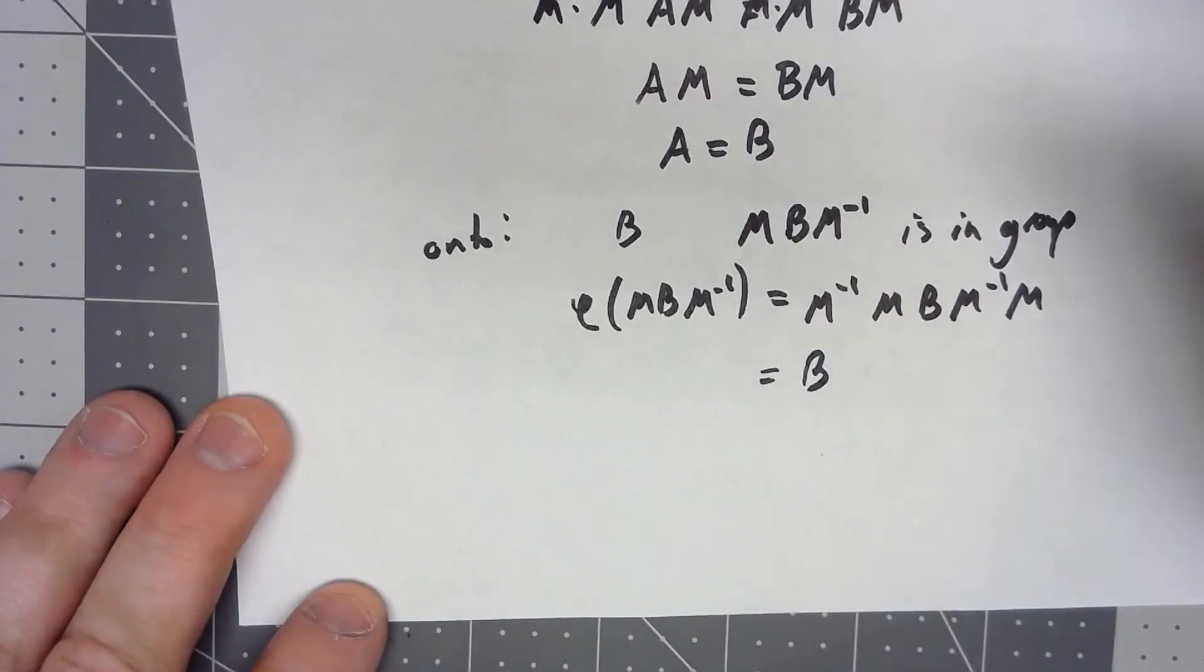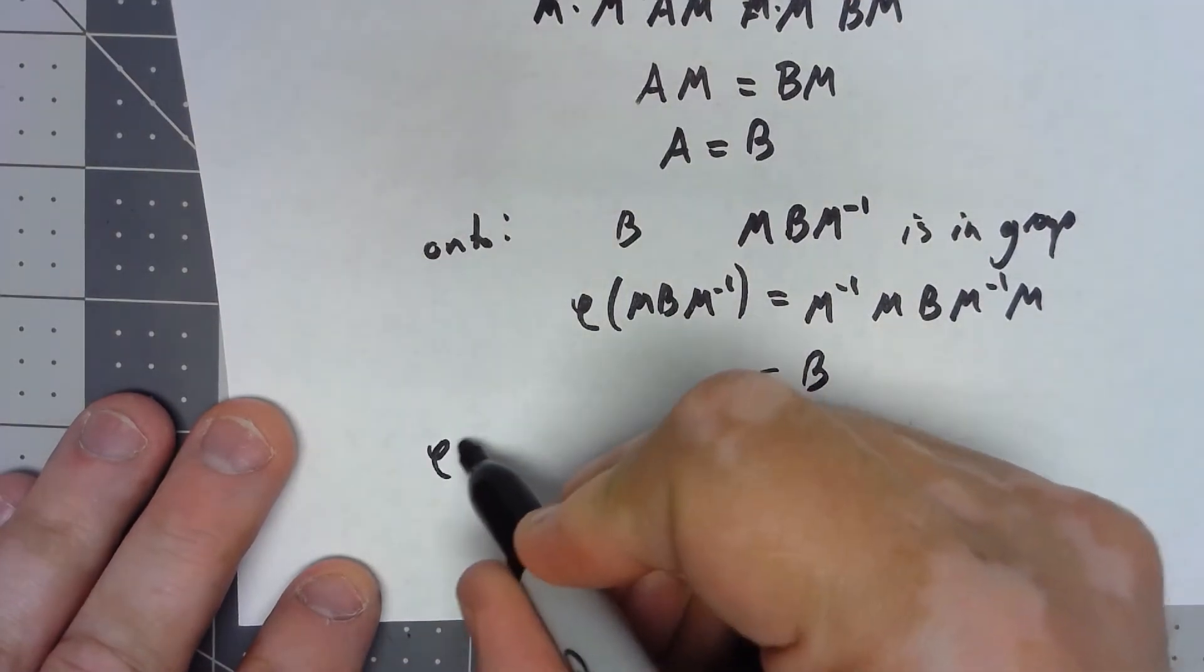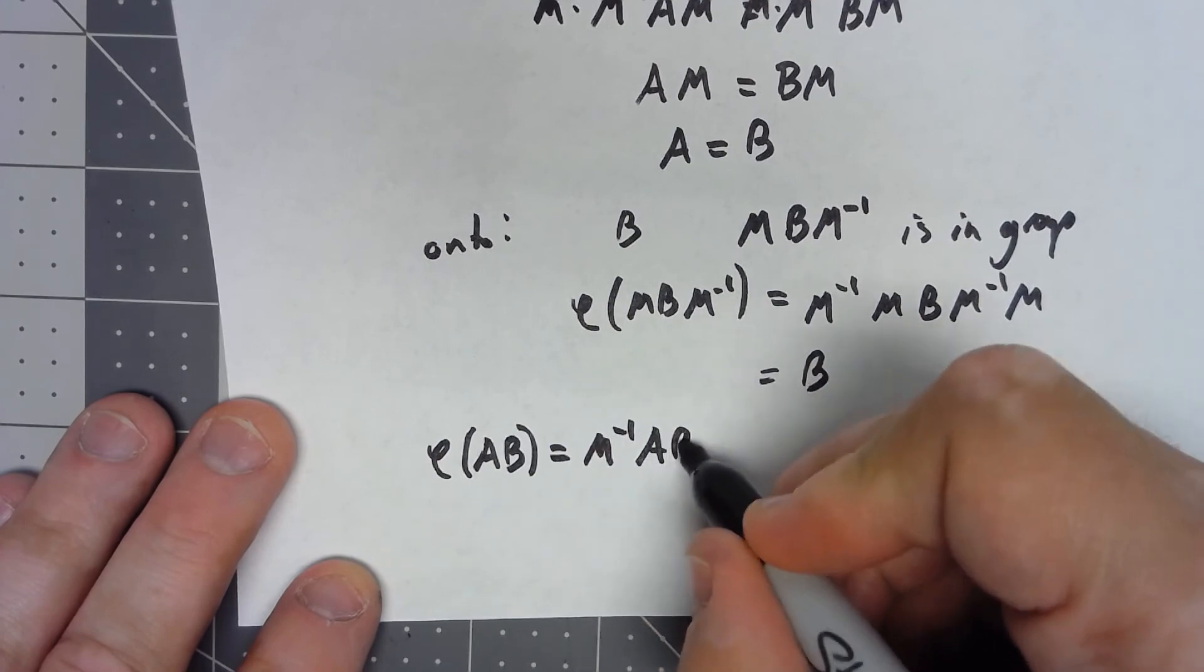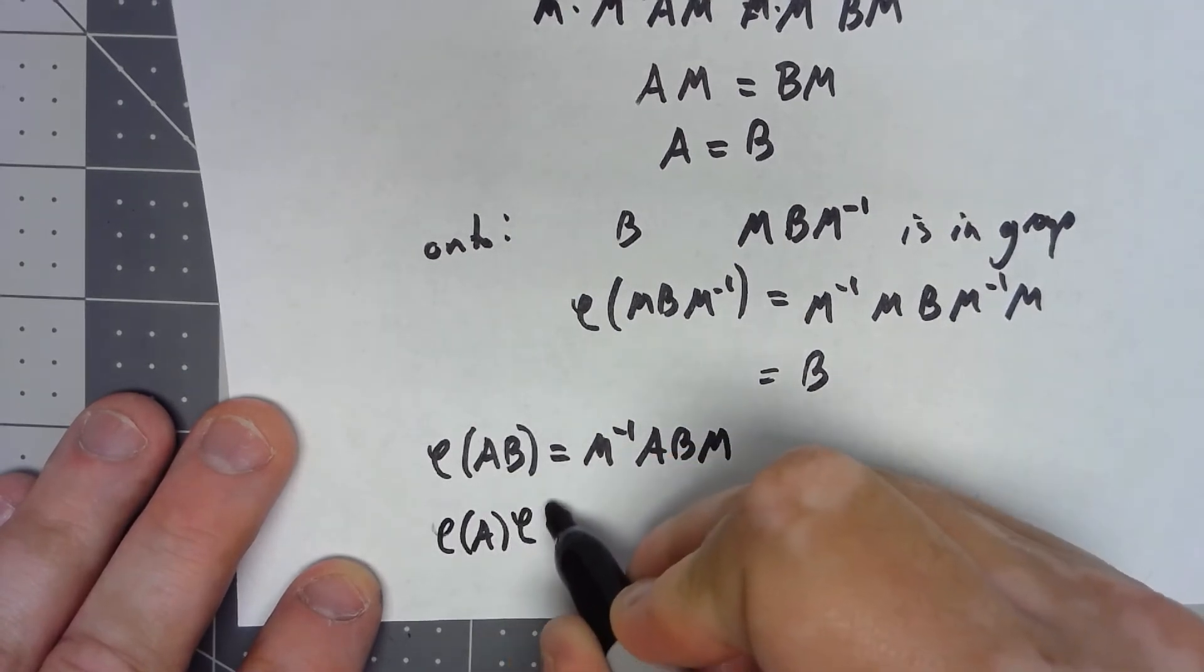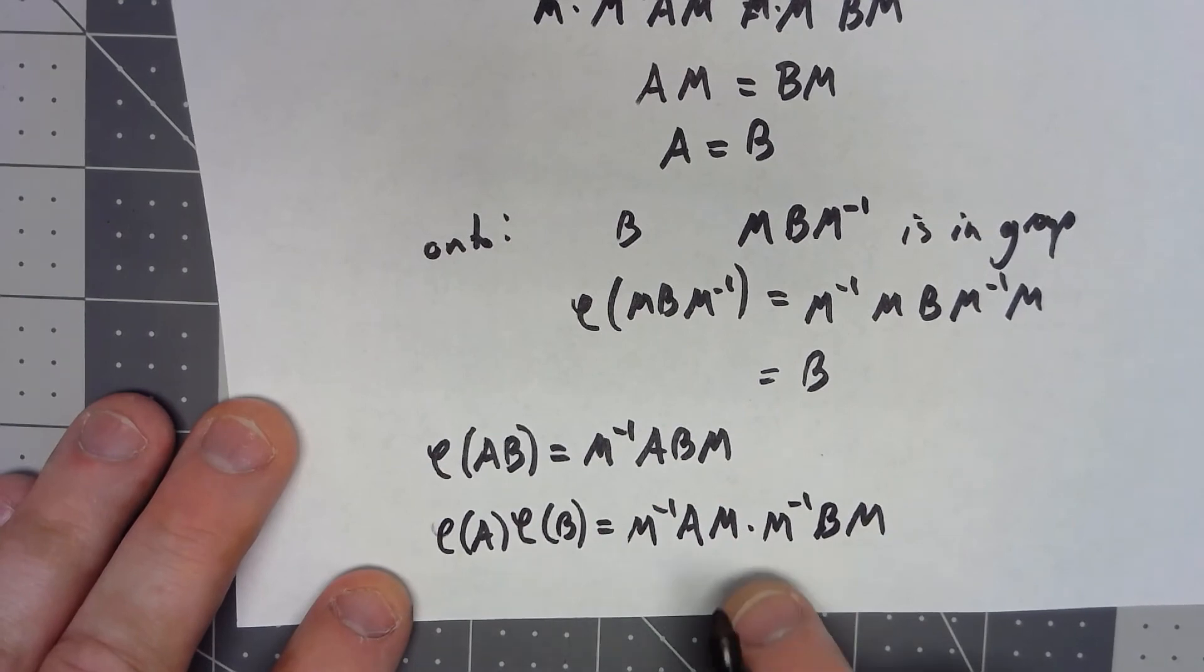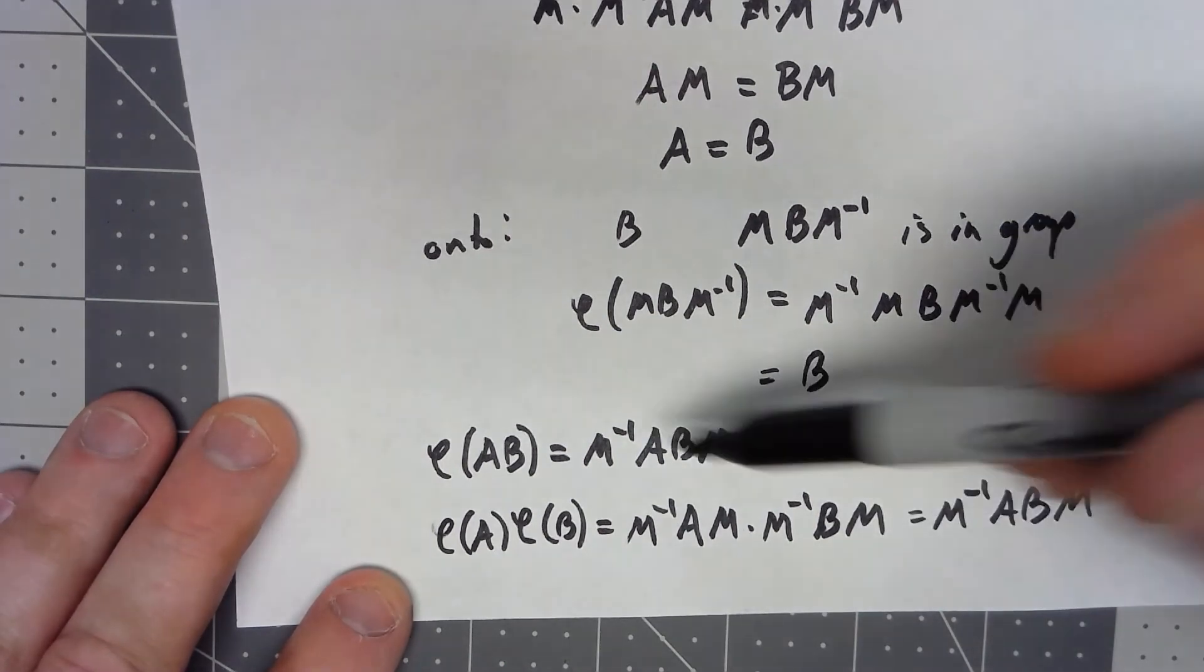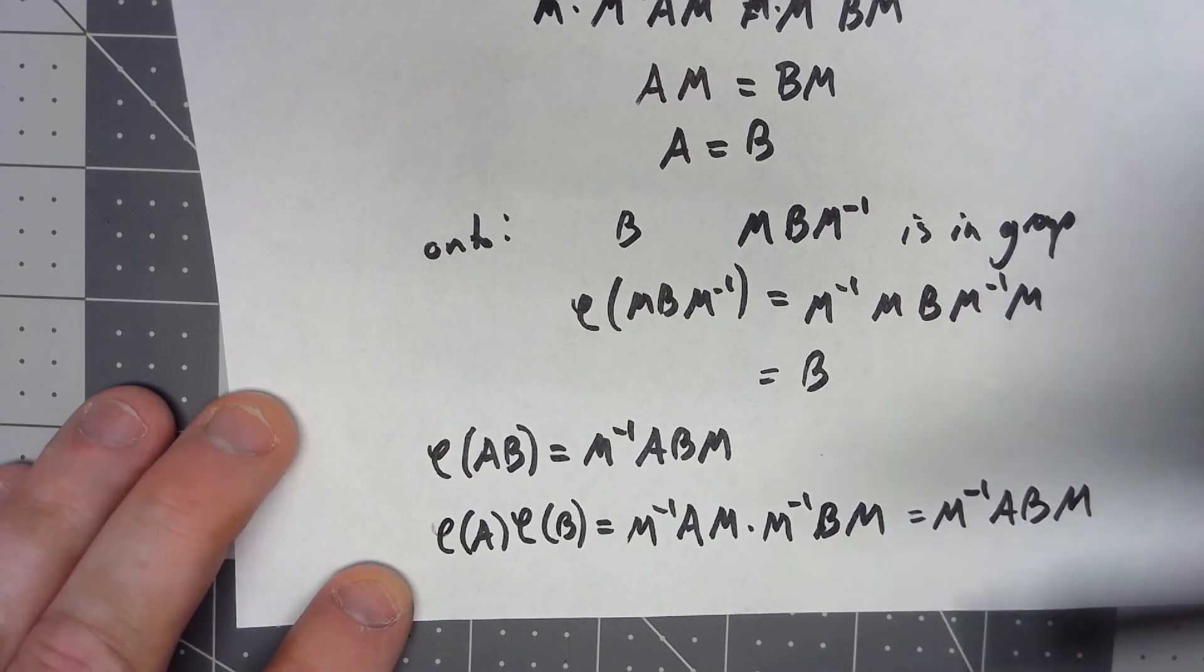Finally, we want to show that this thing has the property, which I'm going to call the homomorphism property. To show that this has the homomorphism property, I'm going to say, what if I have phi of AB? Well, that's going to be equal to M inverse ABM. On the other hand, if I do phi of A times phi of B, I'm going to get M inverse AM times M inverse BM. Those middle ones are going to give me the identity, so I'm going to get M inverse ABM. Either way, I'm getting M inverse ABM, so these things must be equal. Therefore, it's one-to-one, onto, has the homomorphism property, so this is an isomorphism.